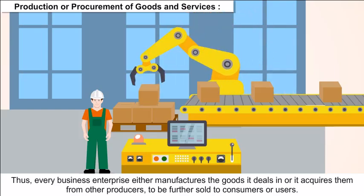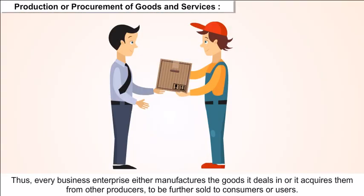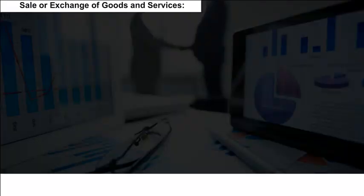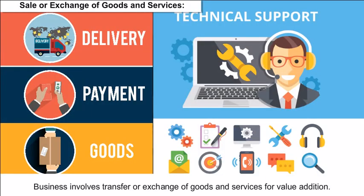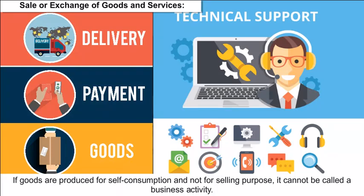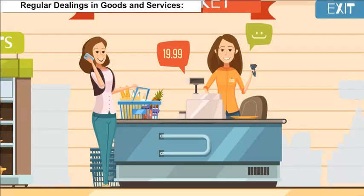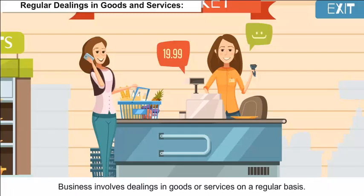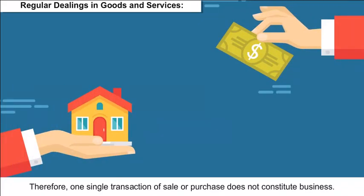Every business enterprise either manufactures the goods it deals in, or acquires them from other producers to be further sold to consumers or users. Business involves transfer or exchange of goods and services for value addition. If goods are produced for self-consumption and not for selling purpose, it cannot be called a business activity. Business involves dealings in goods or services on a regular basis; therefore one single transaction of sale or purchase does not constitute business.